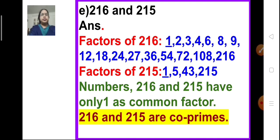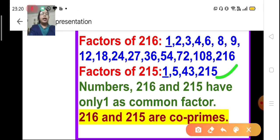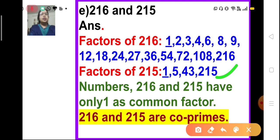Part E: 216 and 215. The factors of 216 are 1, 2, 3, 4, 6, 8, 9, 12, 18, 24, 27, 36, 54, 72, 108, and 216. The factors of 215 are 1, 5, 43, and 215. The only common factor between these two numbers is 1, so 216 and 215are co-prime numbers.